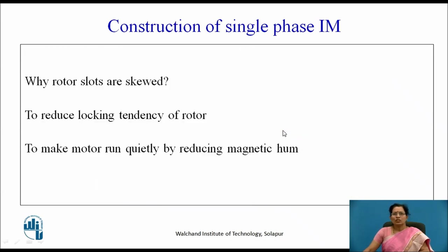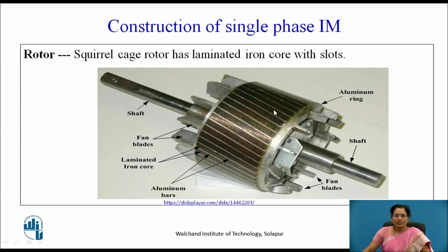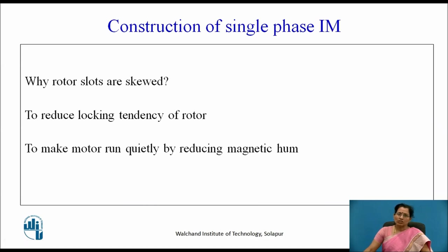Why are the rotor slots skewed? You can see here, these rotor slots have some inclination with the shaft — these slots are not parallel with the shaft. Some inclination is provided. Rotor slots are skewed to reduce the locking tendency of the rotor and to make the motor run quietly by reducing the magnetic hum, because skewed slots reduce the noise created in the motor that is called magnetic hum.